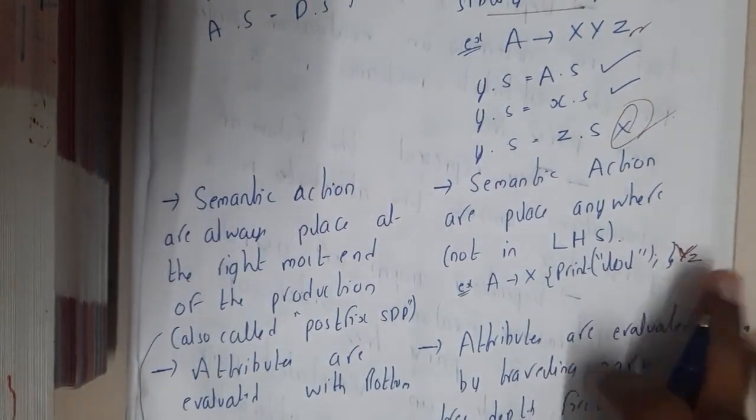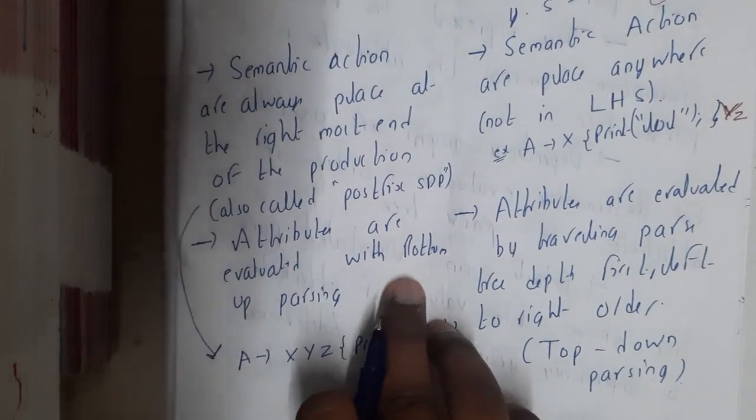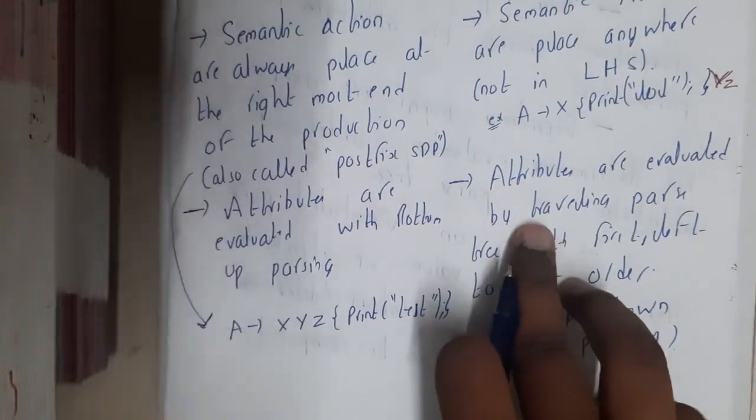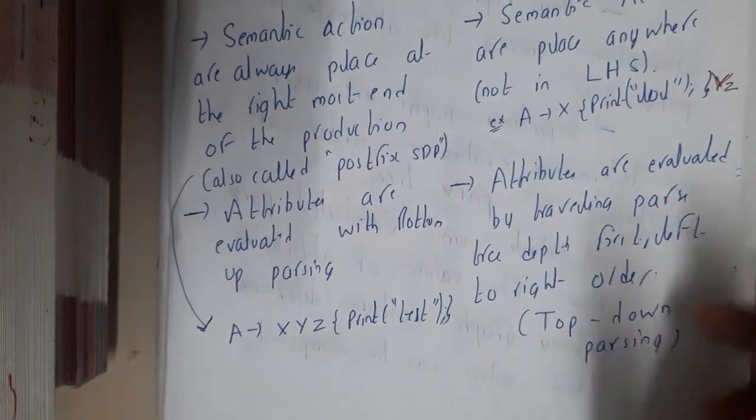Attributes are evaluated in a bottom-up parser, and attributes are evaluated in the depth-first search, that is left-to-right order, that is top-down parsing. So this is the difference between